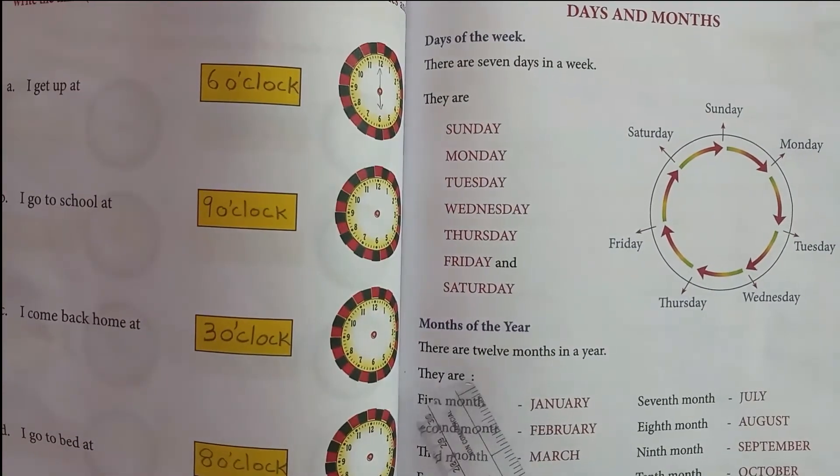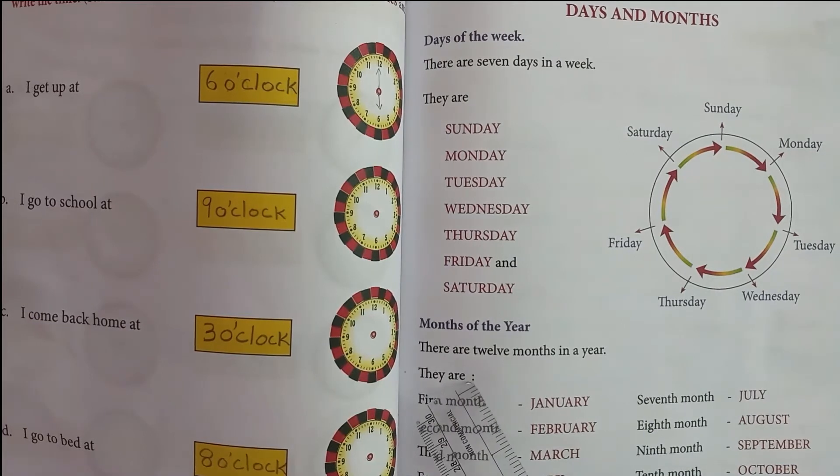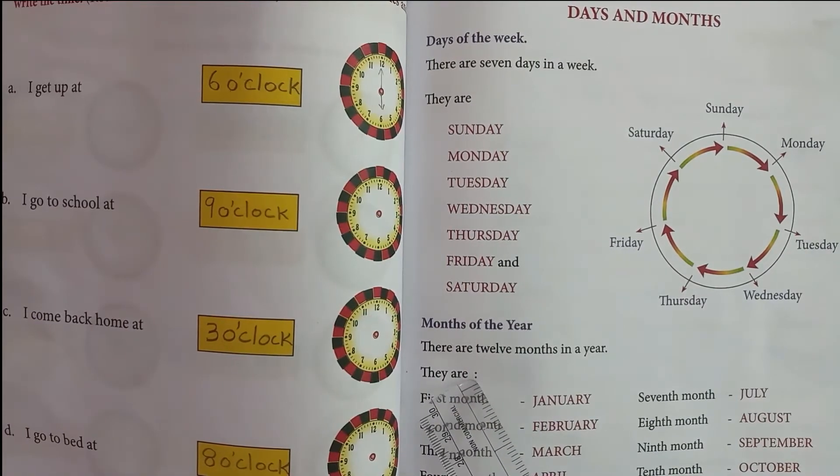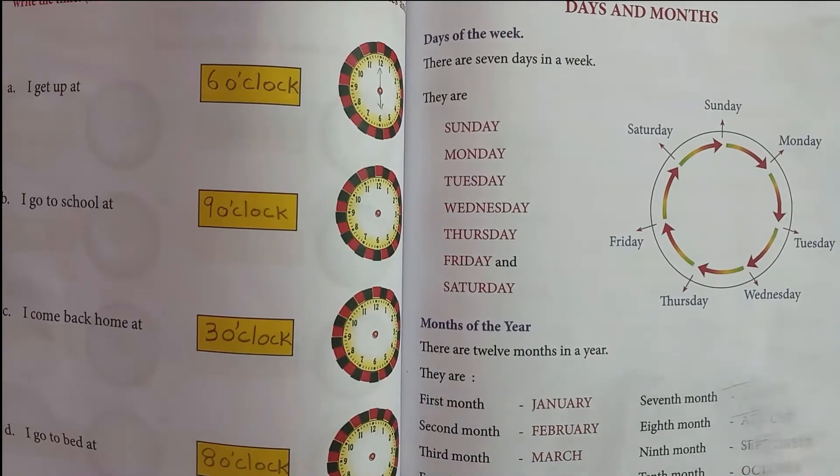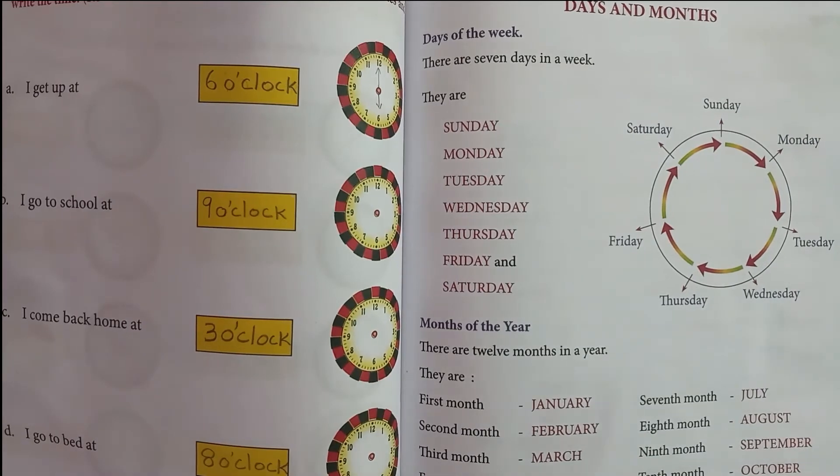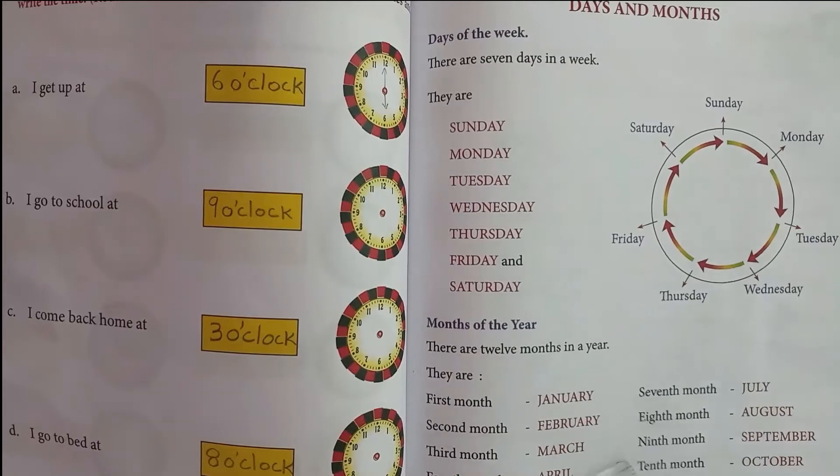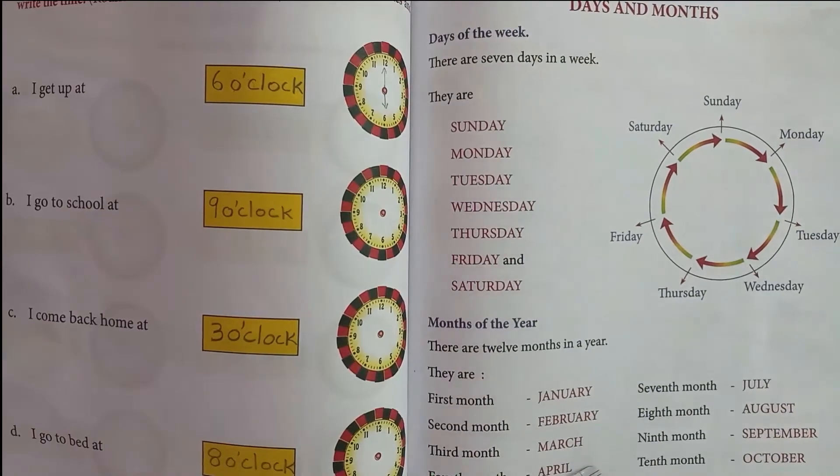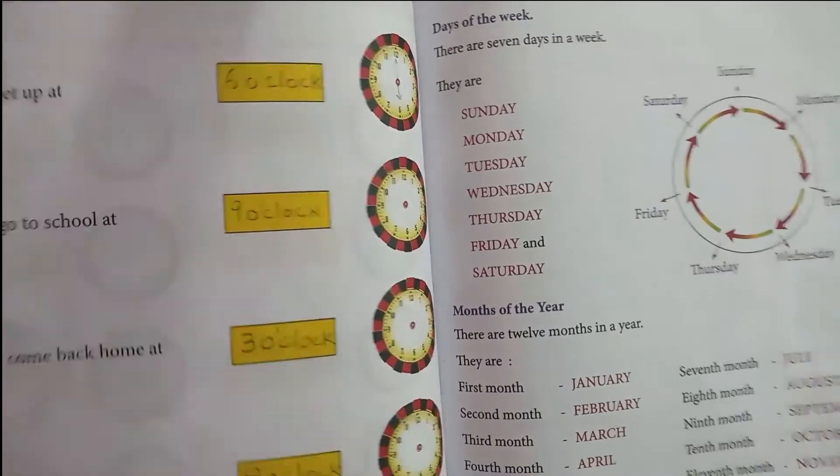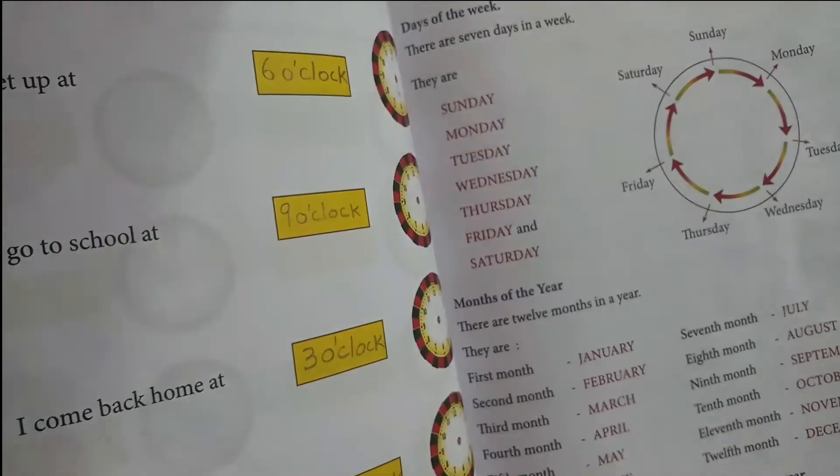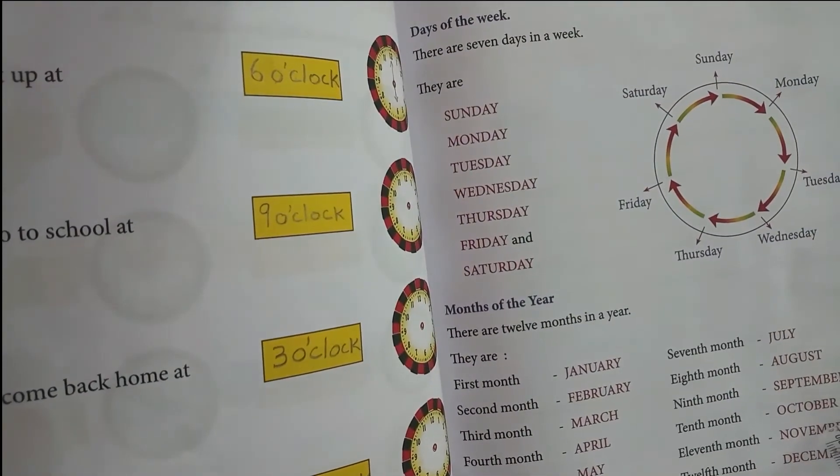Months of the year: How many months are there in a year? There are 12 months in a year. They are January, February, March, April, May, June, July, August, September, October, November, and December.